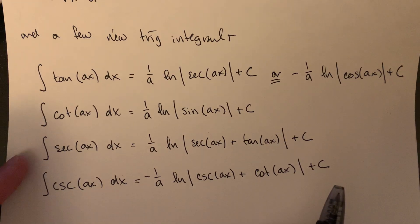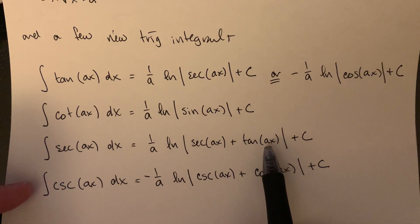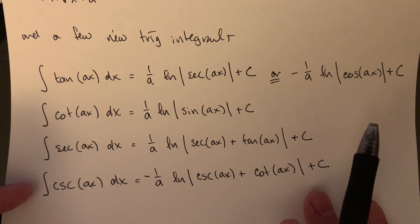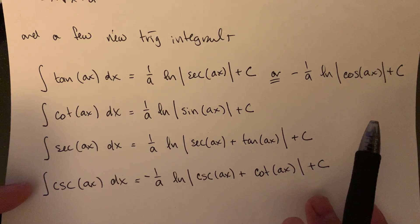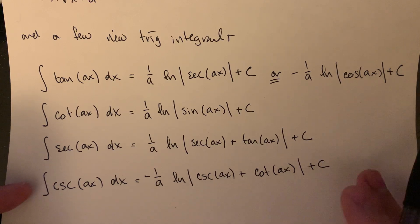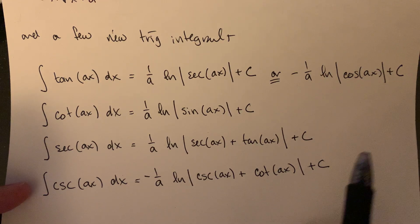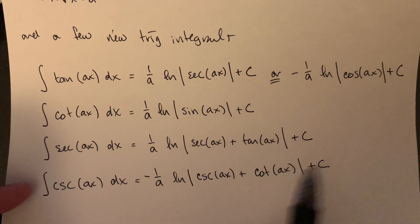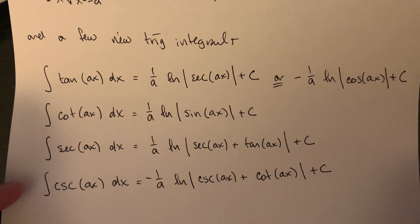Cotangent is cosine over sine, so you get one over a times natural log of the absolute value of sine of ax. Secant and cosecant have more complicated antiderivatives coming from more complicated fractions. I don't want to go into the details, but we have these forms ready — so if we run into not just a sine or cosine but a tangent, cotangent, secant, or cosecant standing alone in an integral, we have antiderivatives for all of those.